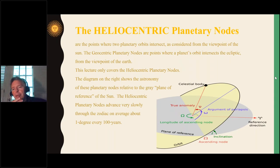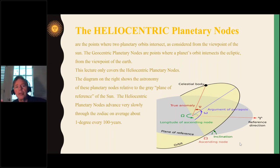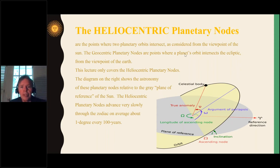The heliocentric planetary nodes are the points where two planetary orbits intersect — specifically where a planet crosses above the orbital plane and below it. When it goes above the plane, it's called the north node. When it moves below the plane, it's called the south node. Geocentric nodes also cross the ecliptic, but this lecture is only going to cover heliocentric planetary nodes.